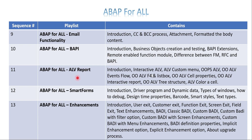The next concept is ALV reports. Once you complete the previous playlists - around ten - you'll be very comfortable writing any kind of ABAP programming, and then you can take on ALV reports. This playlist includes the introduction, interactive ALV, how to create a custom menu, and object-oriented ALV. It also covers F4 list help, cell properties, tree structure using object-oriented concepts, and how to color a cell.